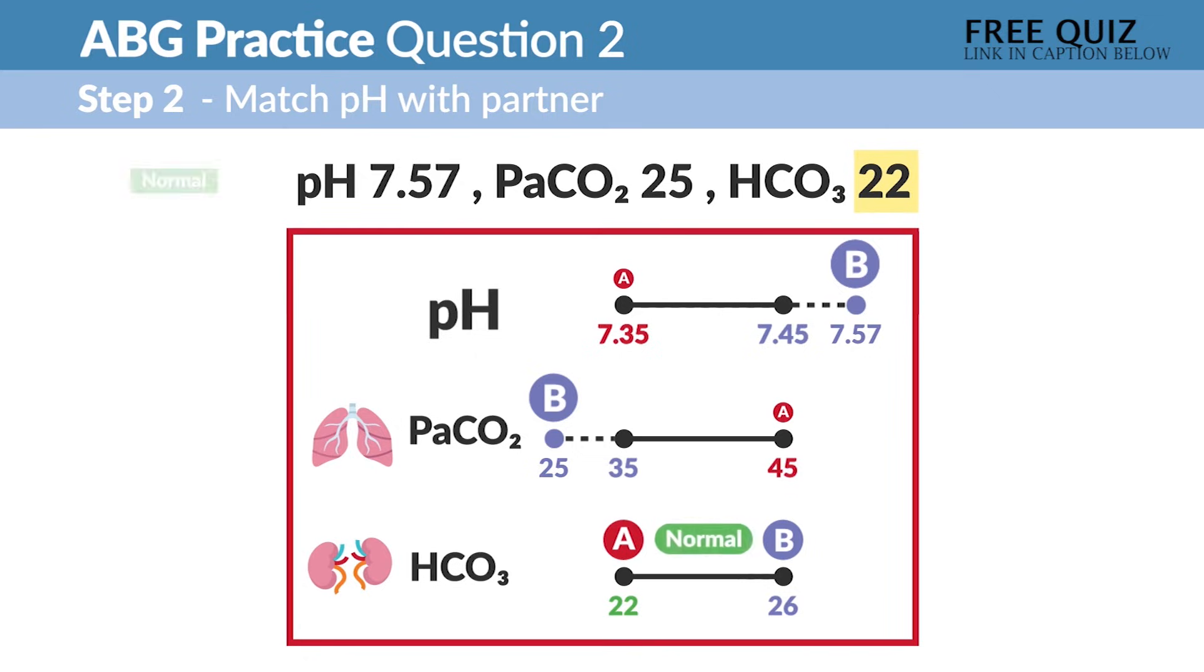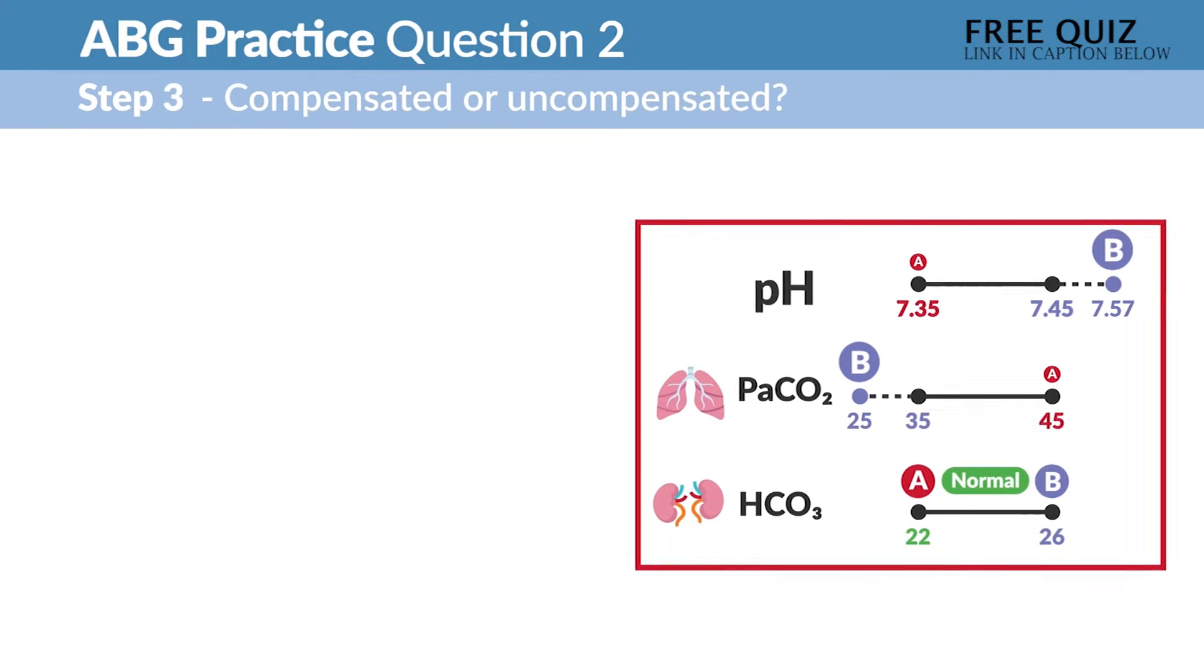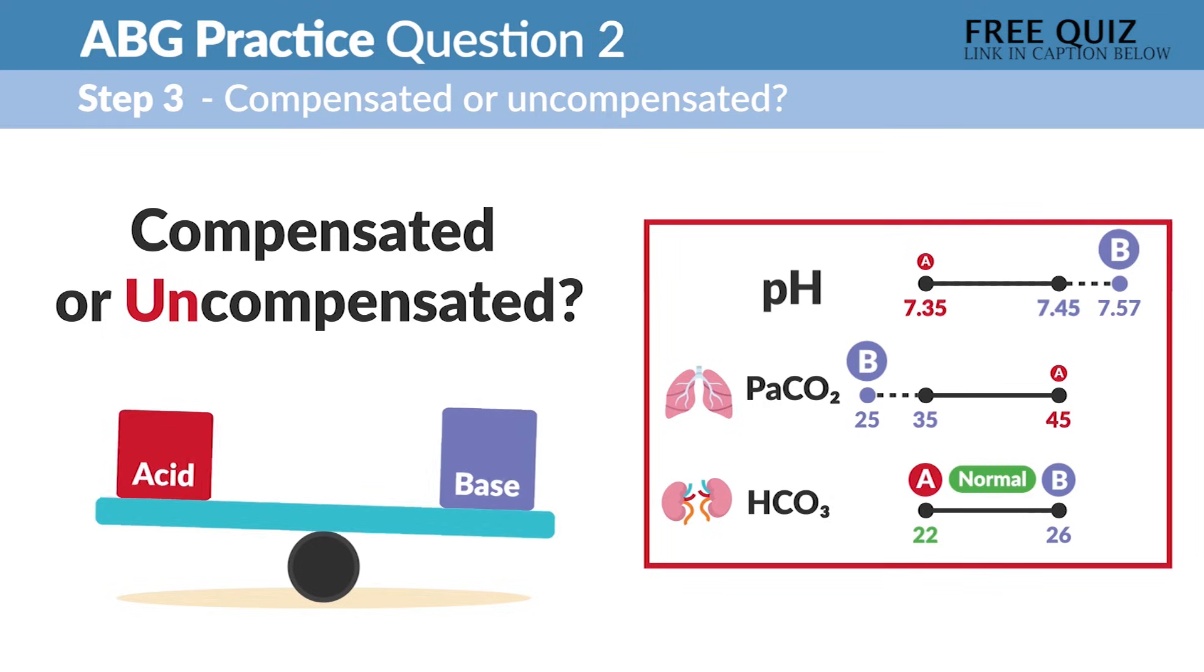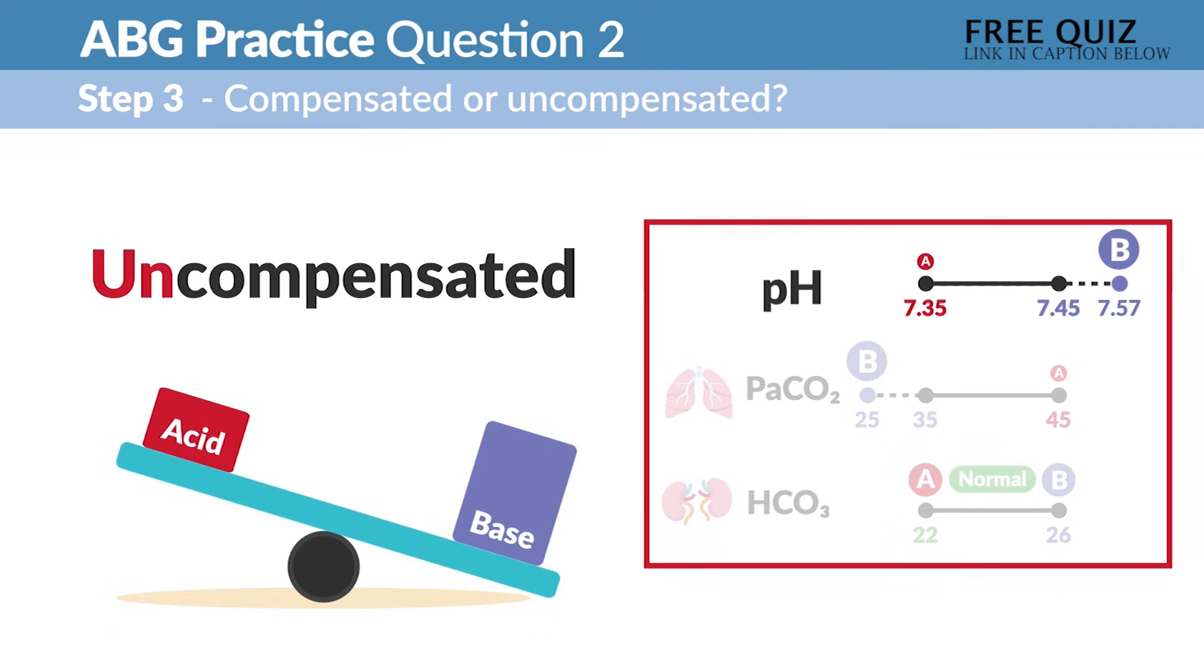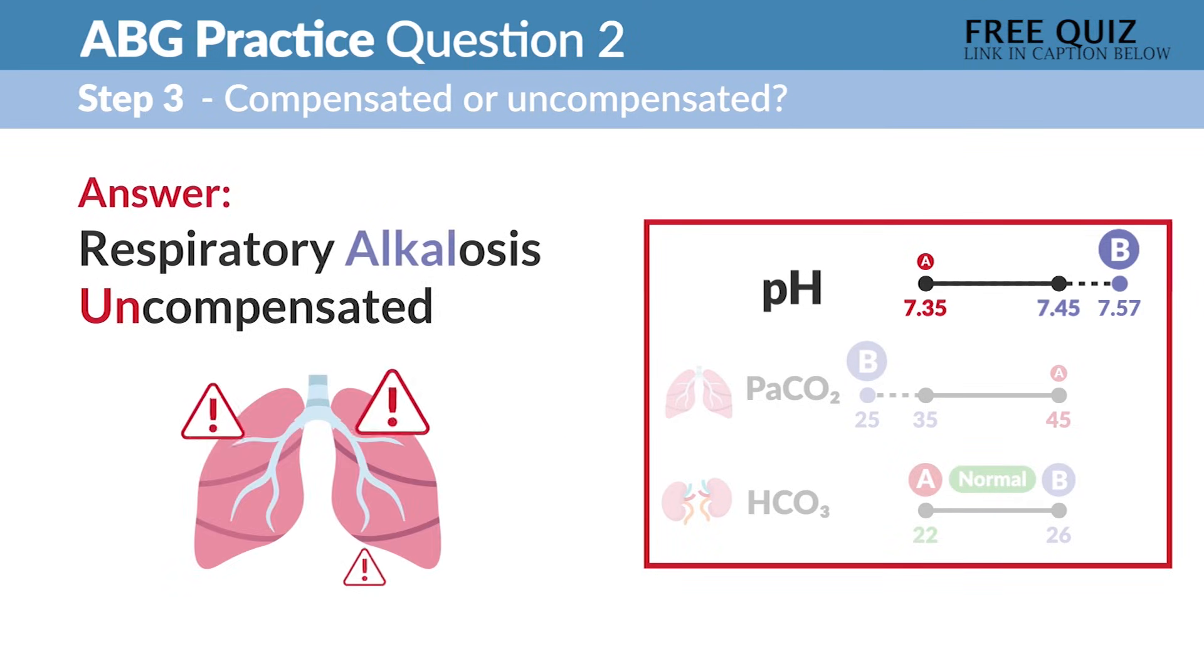And HCO3 is 22, so it's technically right on the border, but it's normal, so it's not a match. Now step three: is it compensated or uncompensated? So you have to ask, is the pH in normal range? Well no, so it's not in balance. It didn't find that common ground of compensation, so it would be uncompensated.